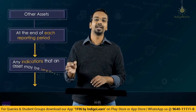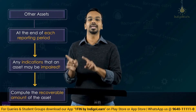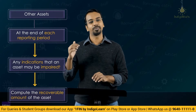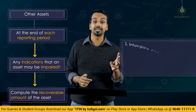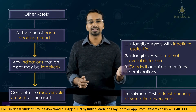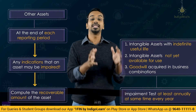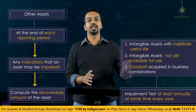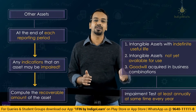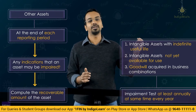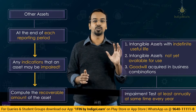When should we do impairment testing? For other assets, you have to check at the end of each reporting period whether there are any indicators of impairment; if there are, you carry out the impairment testing. But for three assets — goodwill, intangible assets with indefinite useful life, and intangible assets not yet available for use — these have to be tested for impairment at least annually. The time period in which they are tested should be consistent from one year to the other. And if there are indications of impairment, you will have to do the impairment testing for these assets as well.